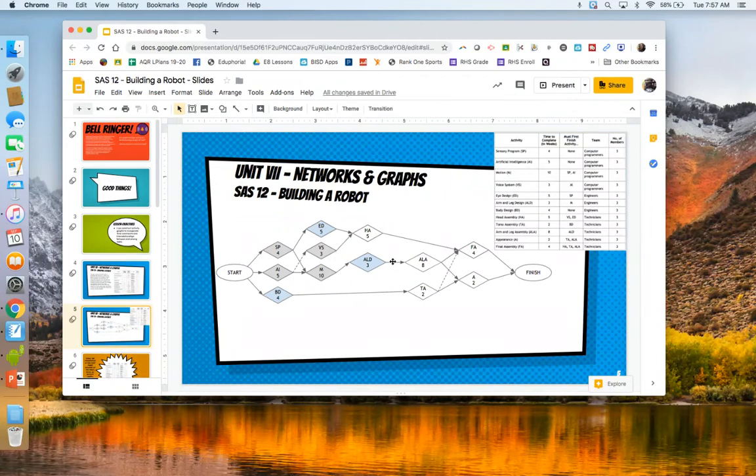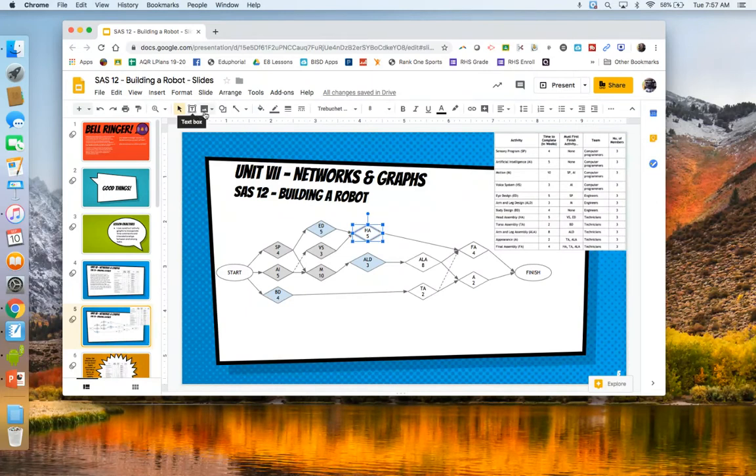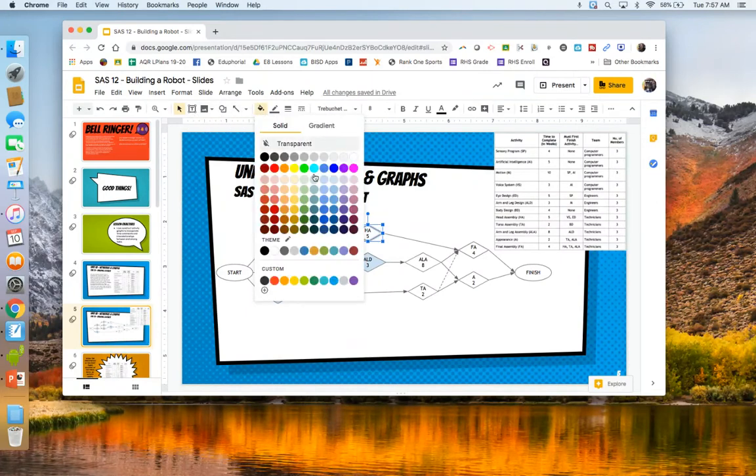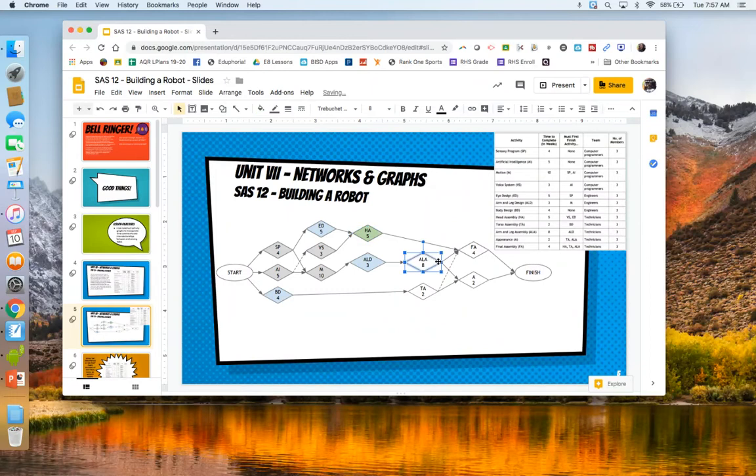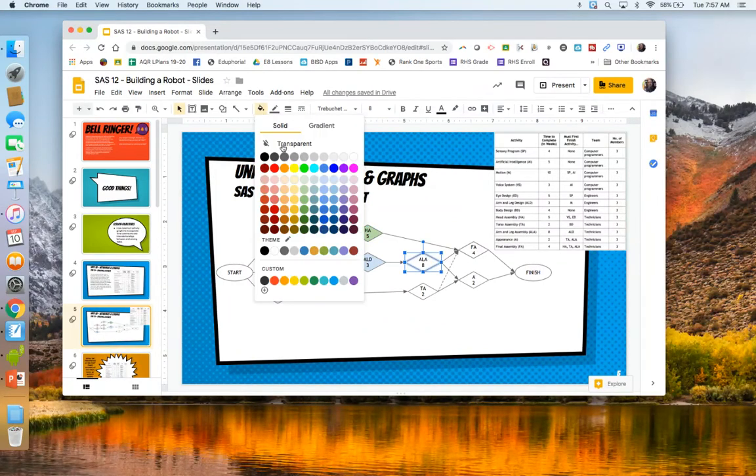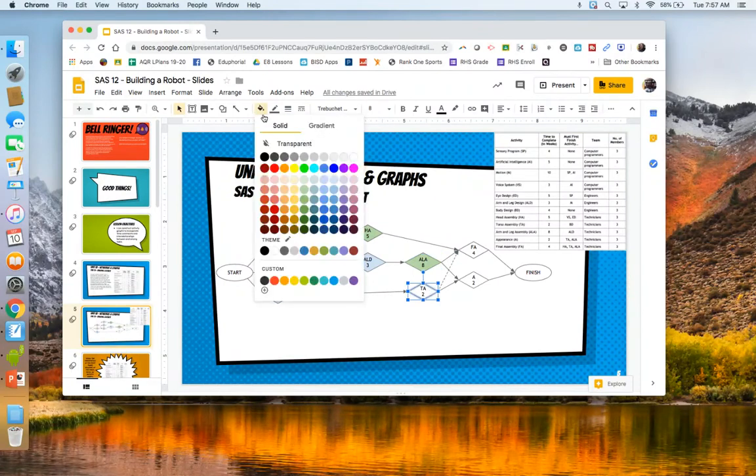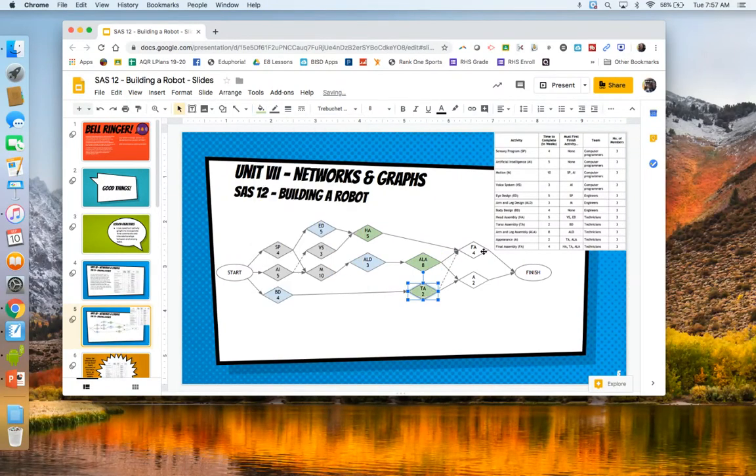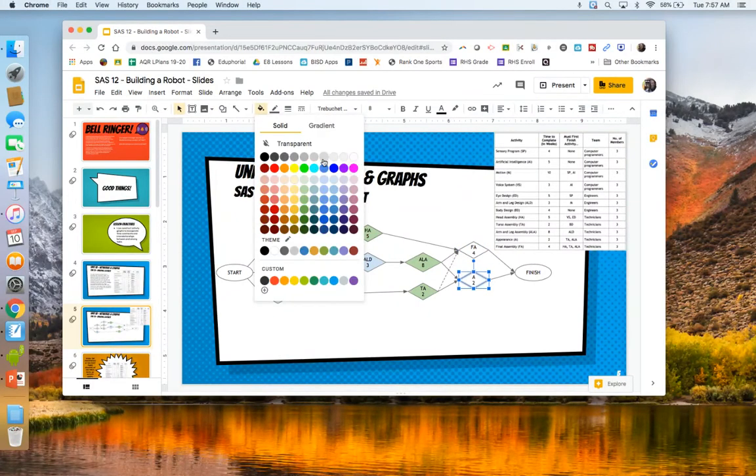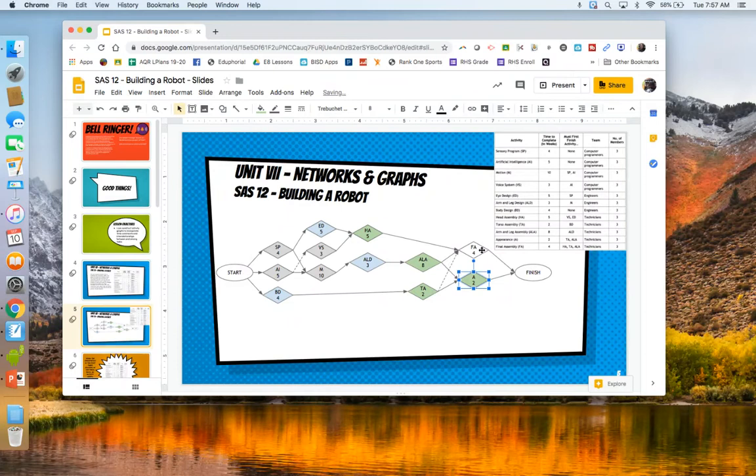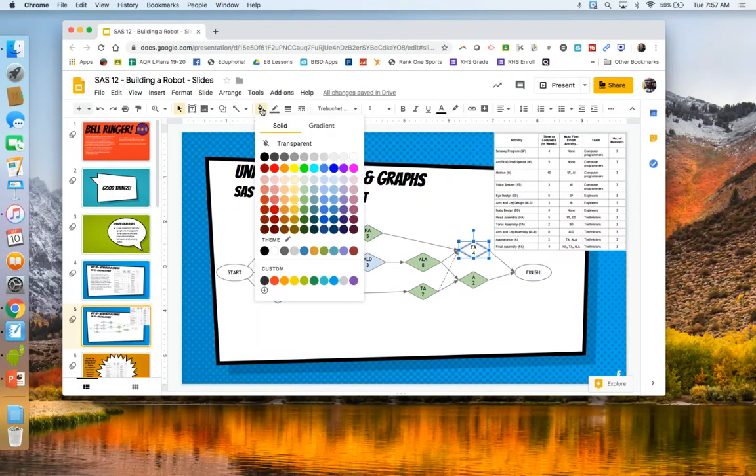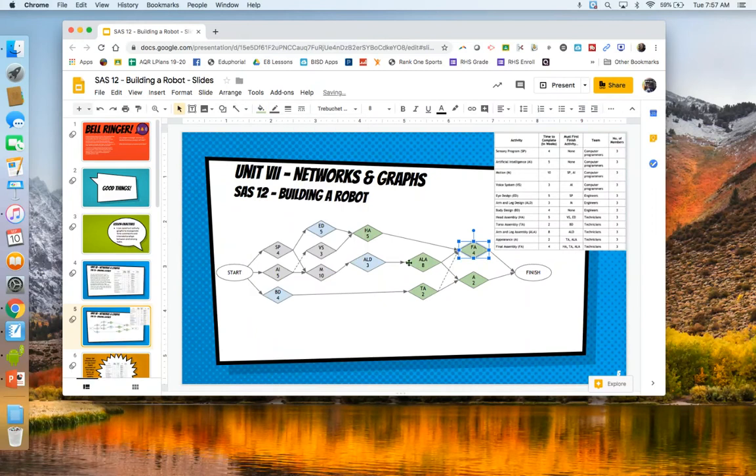Here we go right there. All right. So all the remaining tasks are by the technicians. And we're going to color those green. How's that? So head assembly, we'll color it a light green. Arm and leg assembly, same thing, light green. Torso assembly, light green. These are all by engineers. Let's see. Appearance, light green. And then finally, the last one. Fire assembly is also light green.